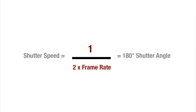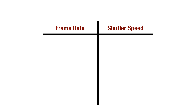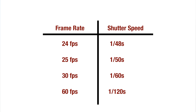To achieve this, your shutter speed needs to be the reciprocal of double your frame rate. So if you're shooting 24 frames per second, your shutter should be 1/48th of a second, or 1/50th if your camera doesn't allow for it. At 30fps, shutter should be 1/60th of a second, and so on.